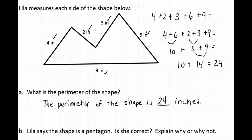The second part of this question says, Lila says the shape is a pentagon. Is she correct? Explain why or why not. Well, a pentagon is a five-sided shape, and if you look at the shape, we added five different sides to come up with the perimeter. So Lila is correct.